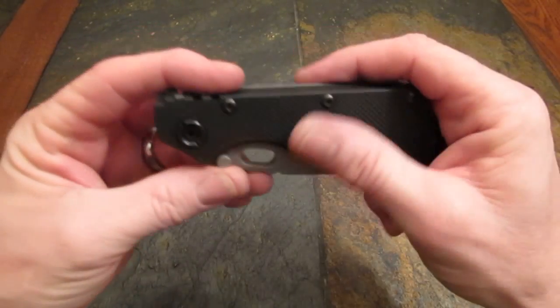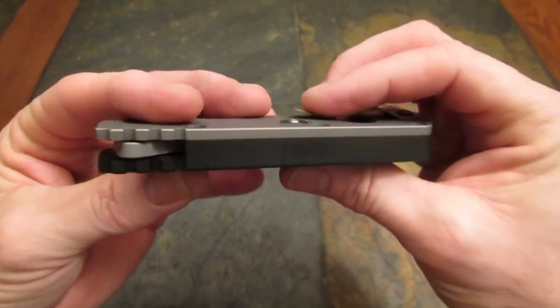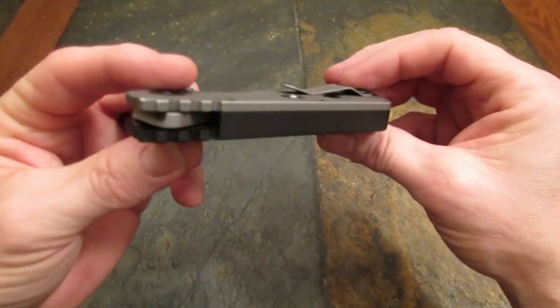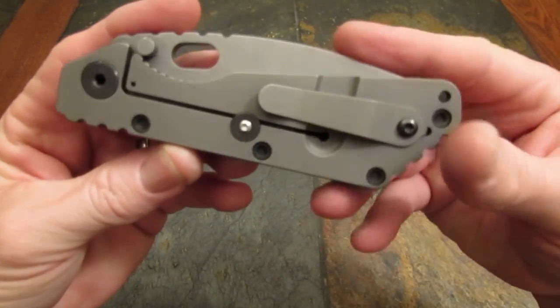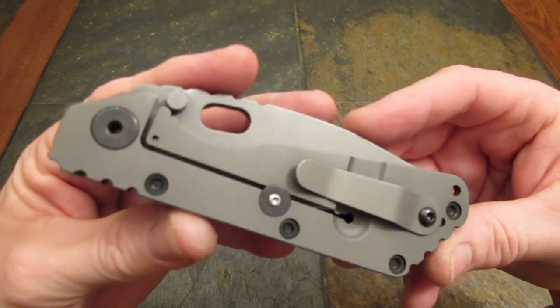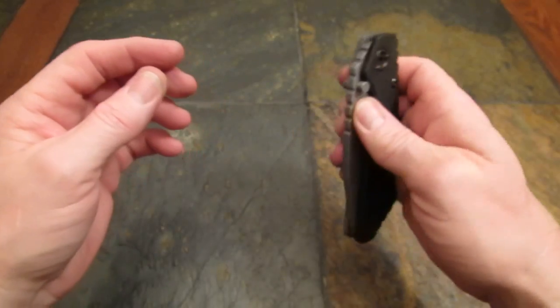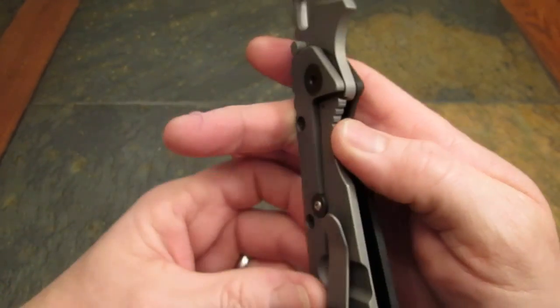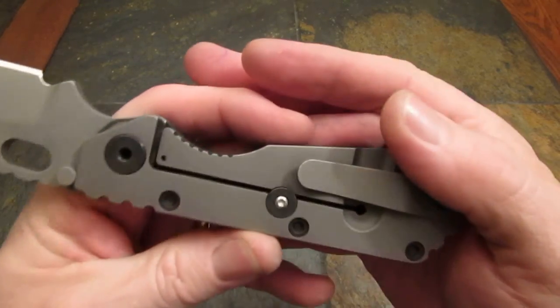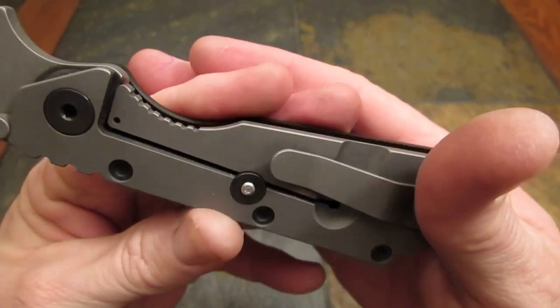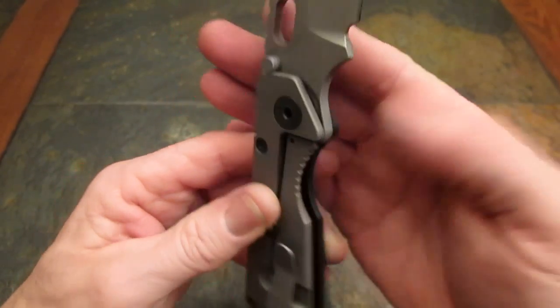Construction on this thing is a very aggressively textured G10 show side scale with integral backspacer, so that means the backspacer and the show side scale are one piece of machined G10. The frame lock side is 6AL-4V titanium. It is a frame lock, no steel insert, and the clip is tip up right side carry only. Does have the Hinderer lock bar stabilizer/overtravel stop, big old beefy Strider pivot.